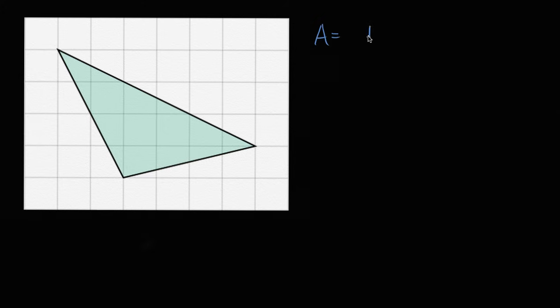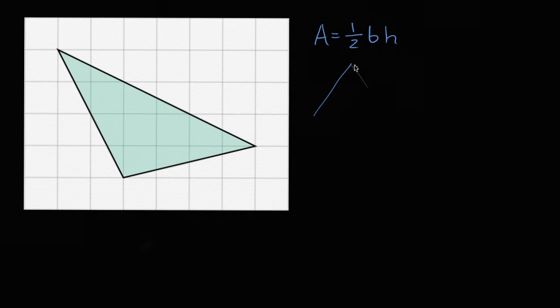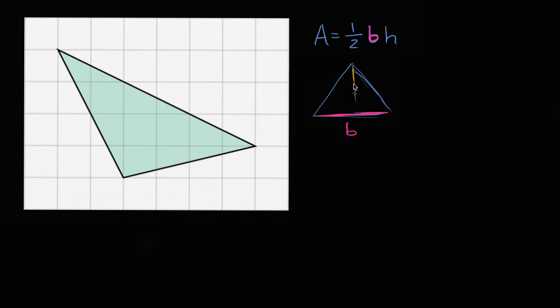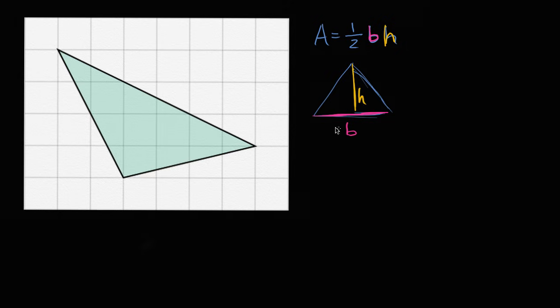Whenever you start thinking about areas of a triangle, my brain says: I can figure out the area of a triangle if I know the base and the height. I can just multiply them and then multiply by one half. So if I have a triangle where this is the base b and this is the height, then I just multiply base times height times one half and I'll get the area.